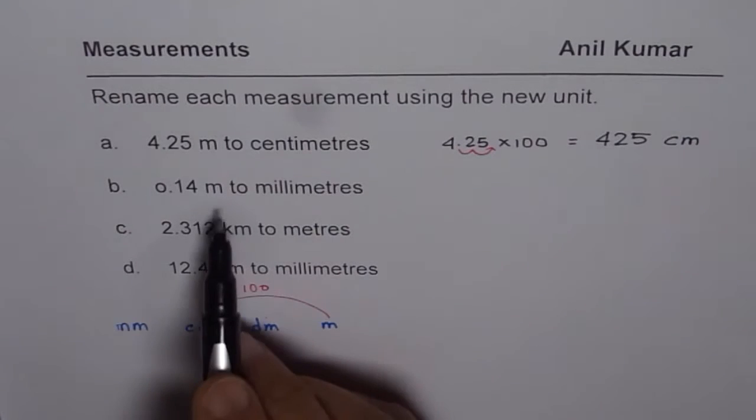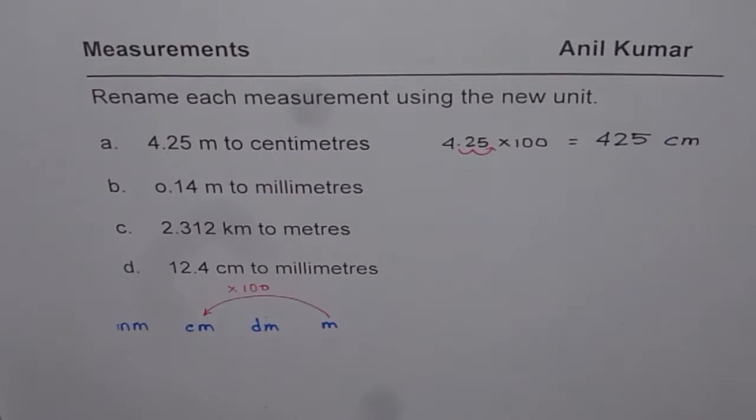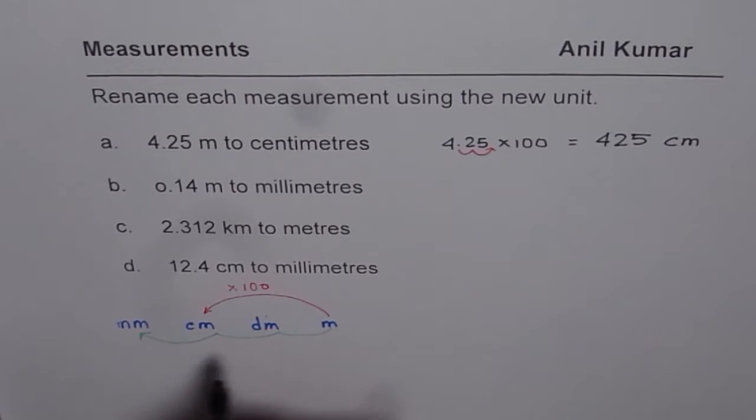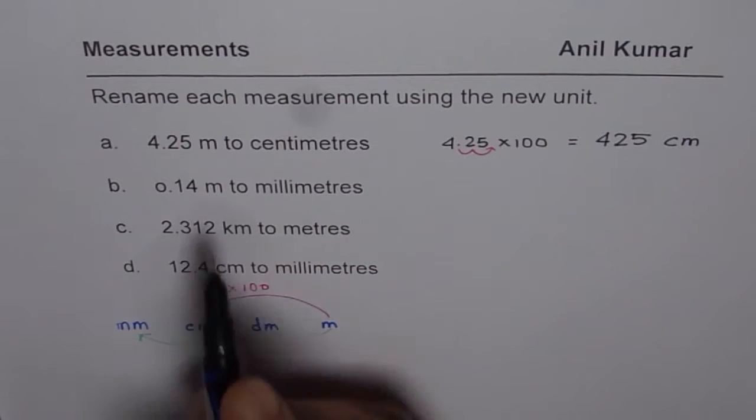Now let us convert from meters to millimeters. This time, we are going from meters to millimeters. That means 10, 100, 1000. So that much, 1000. So we are going to multiply this time by 1000.